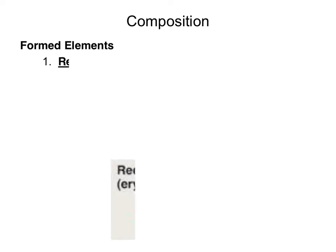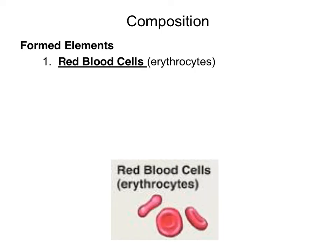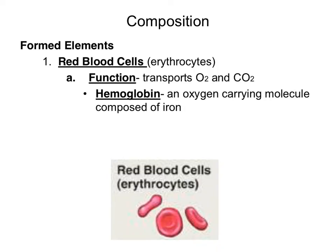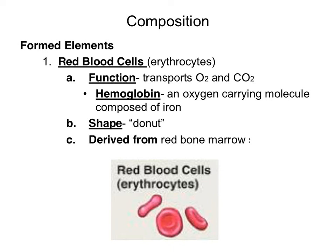The first formed element is a red blood cell, or erythrocyte. The function of a red blood cell is to transport oxygen and carbon dioxide. Transporting oxygen is carried out by a molecule called hemoglobin, which is composed of iron, and iron has a high affinity for oxygen. The shape of a red blood cell is that of a donut, and red blood cells derive from bone marrow stem cells.